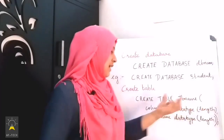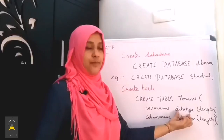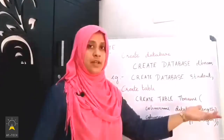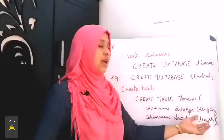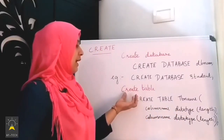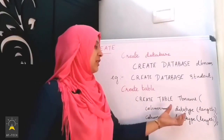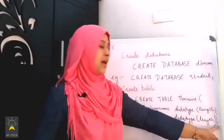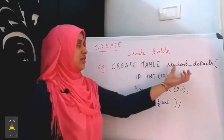Inside the brackets, we define the first column: the column name, the data type, and how many characters in length can be used. We define the length. You can add multiple columns. The syntax for Create Table is: CREATE TABLE table_name, then inside the brackets, the different columns with their data type and length, then close the bracket and mark a semicolon.